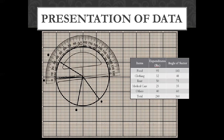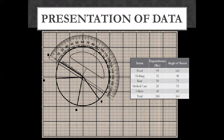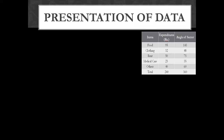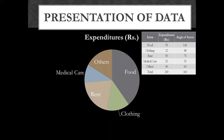For the last sector, we place the angle of 60 degrees. Next is the computerized pie chart. We place different colors for each sector and different designs to clearly show which angle corresponds to which item.